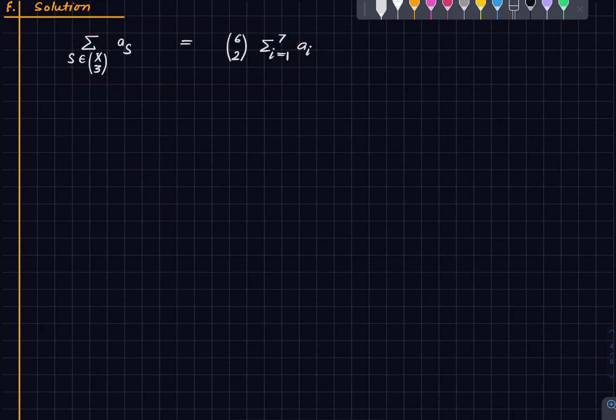And now all we do is we kind of average this out. So to do that maybe let me shift it a little bit. So to average it out we divide both sides by 7 choose 3.